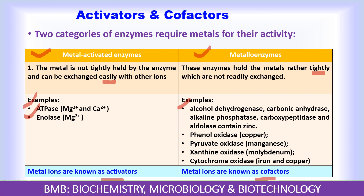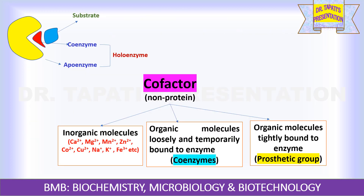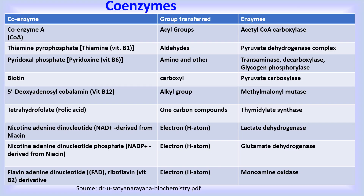Metal ions activating metal-activated enzymes are known as activators, whereas metal ions present in metalloenzymes are known as cofactors. Although some enzymes are solely protein — like pepsin and trypsin — few enzymes need help from a non-protein component; without binding with this non-protein part they cannot carry out the reaction, so they are inactive. The non-protein component of the enzyme is known as the cofactor. Cofactors may be inorganic compounds like metal ions, or loosely and temporarily bound organic molecules known as coenzymes, or tightly bound organic molecules known as prosthetic groups. Most coenzymes are derivatives of vitamin B complex.